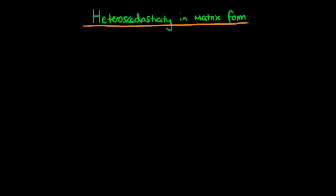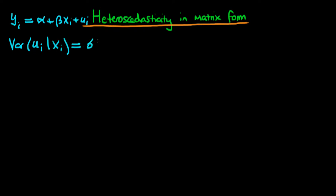We're going to assume a simple model in non-matrix form: yi is equal to alpha plus beta times xi plus an error ui. We assume heteroscedasticity where the variance of ui given xi is equal to sigma squared times xi squared. Notice that the variance depends on xi, meaning we don't have homoscedasticity — we actually have heteroscedasticity.